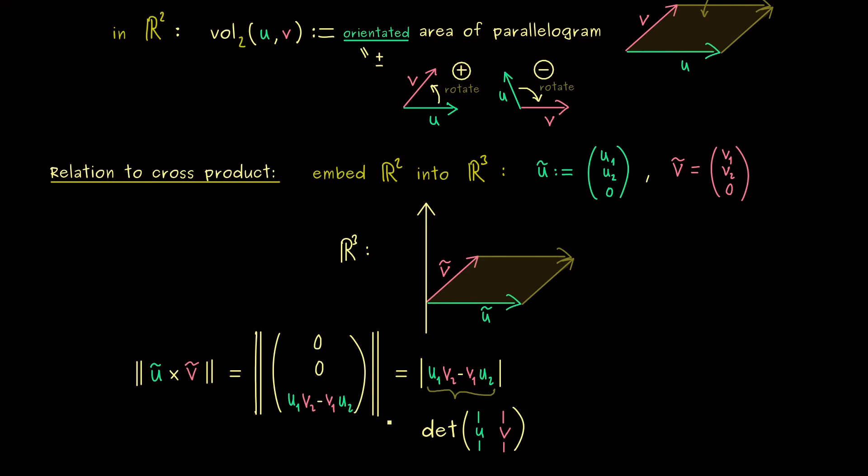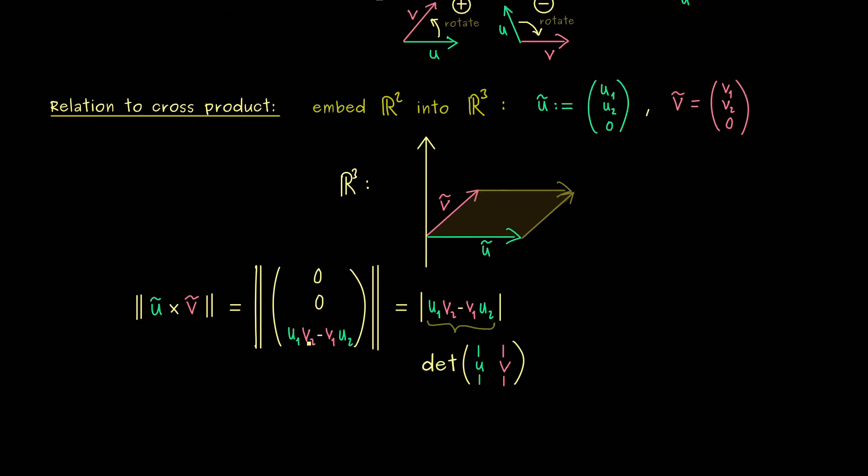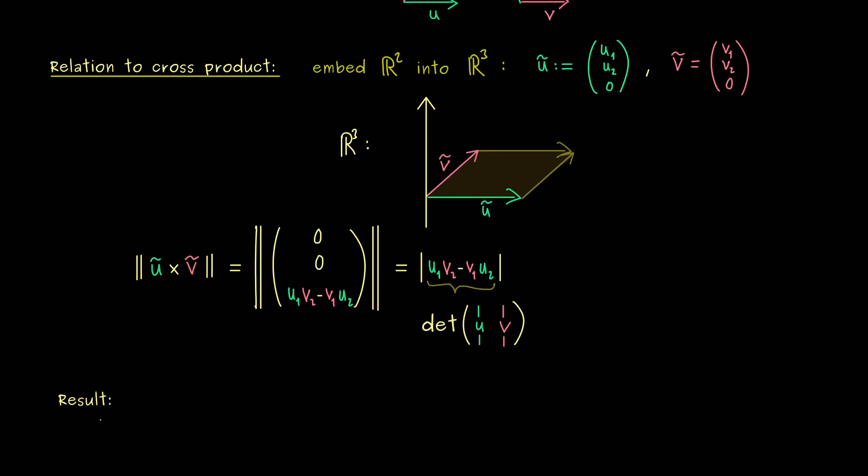Moreover, now you should see if we ignore the absolute value we indeed get our orientated area. In other words, now we see the determinant is exactly our two-dimensional volume function. So this is definitely a result we should write down. So you could say this is the main result of the video today.